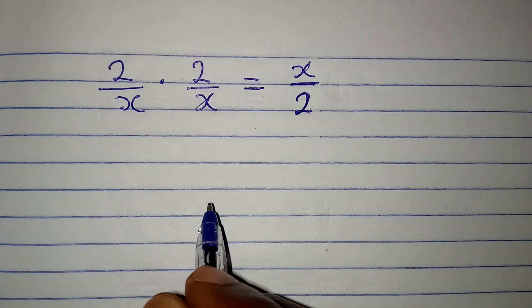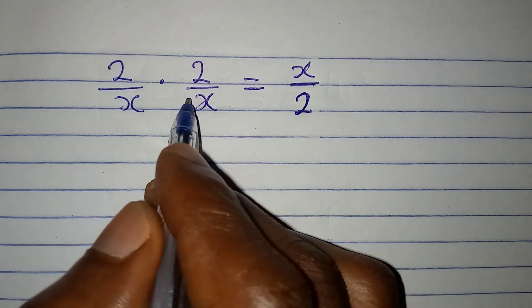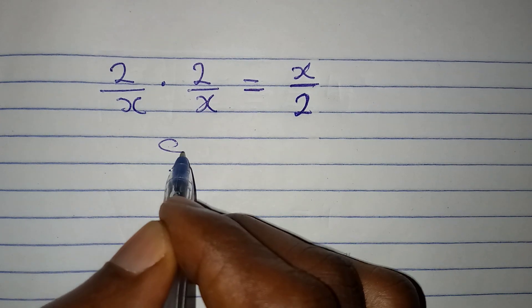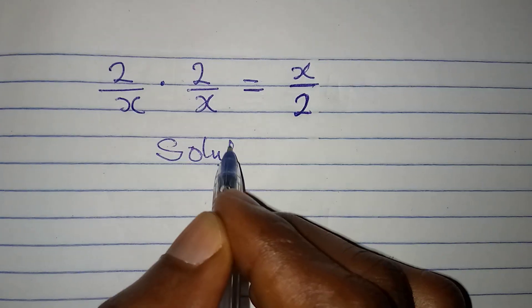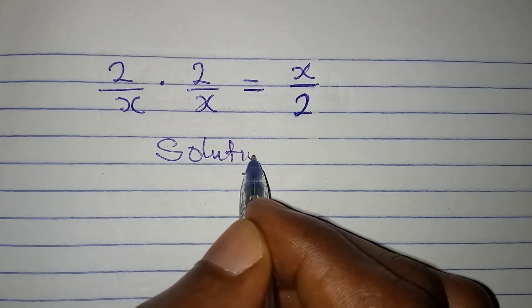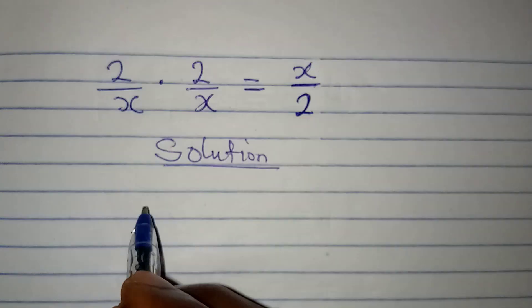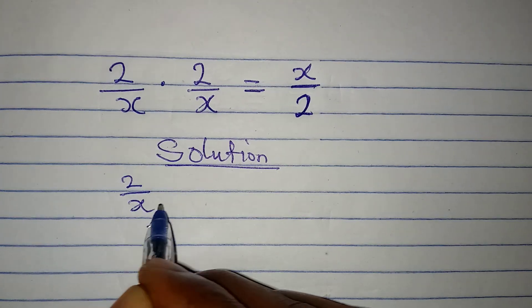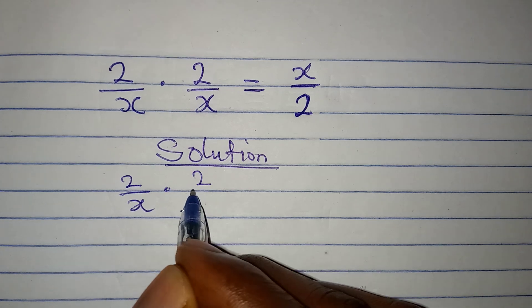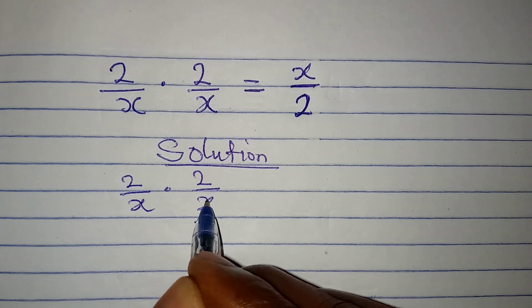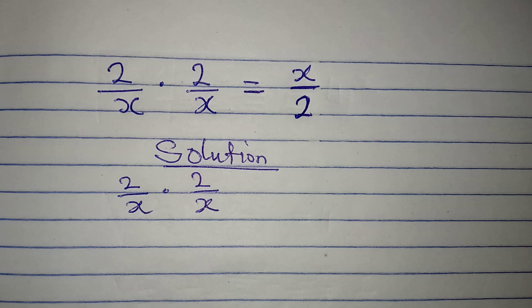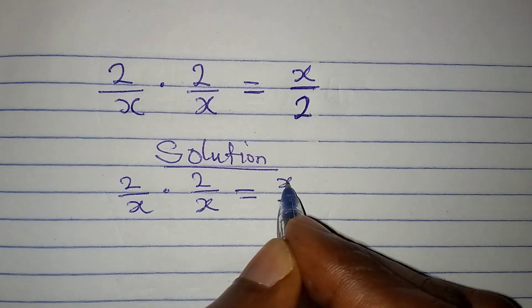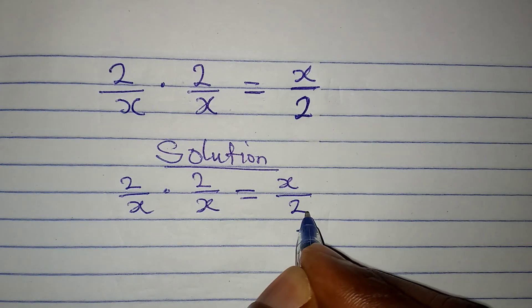Hello everyone, let's solve this problem very quickly. We have 2 over x multiplied by 2 over x, and this is equal to x over 2.